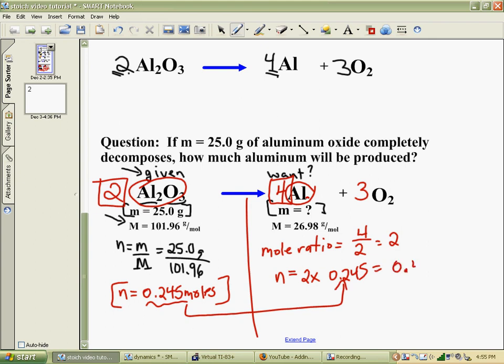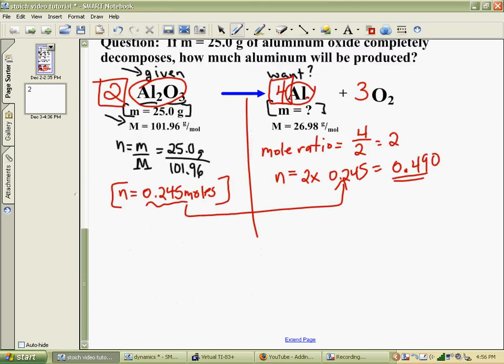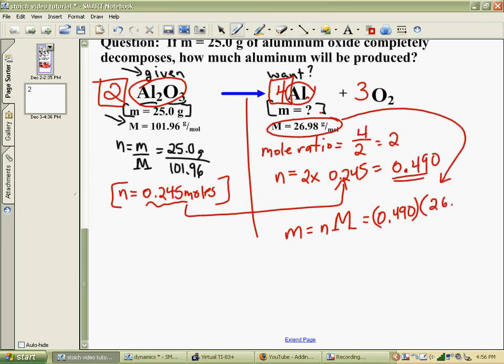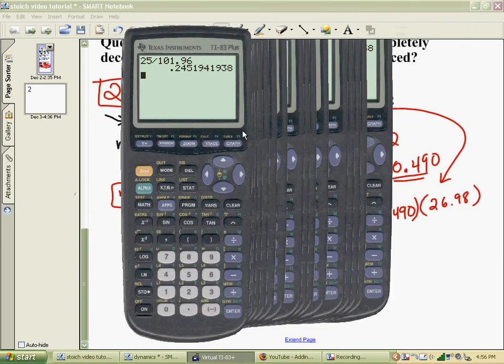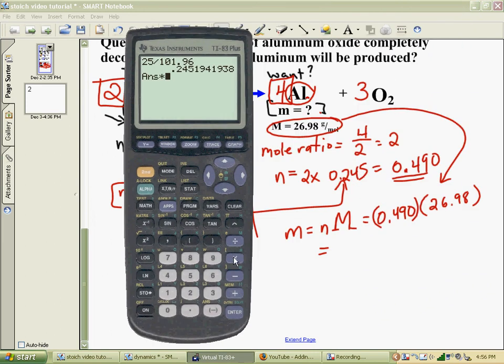Now that's just the moles of aluminum. If you want to get the mass of aluminum, we rearrange our other equation. It's moles times molar mass. So you take your 0.490, and you multiply by the molar mass of aluminum, which is 26.98. We put a rate in there, 26.98 grams per mole, and we'll get an answer in grams. So we'll bring up our calculator. So we needed to double that number. So 0.490 times 26.98 gives me 13.23 grams.